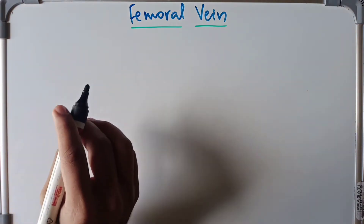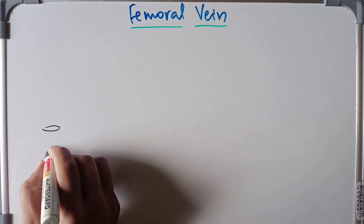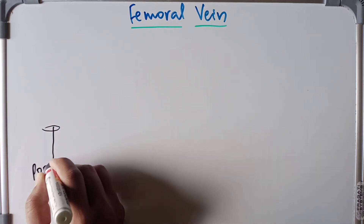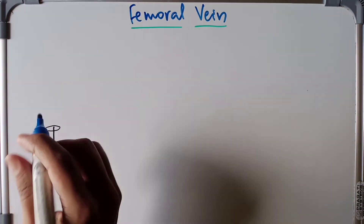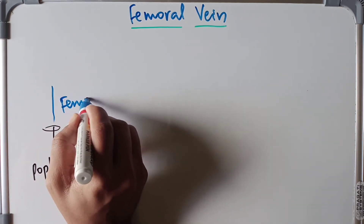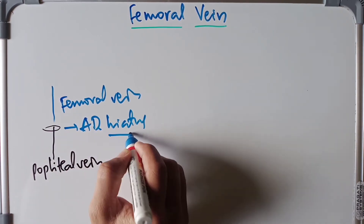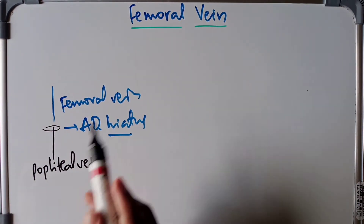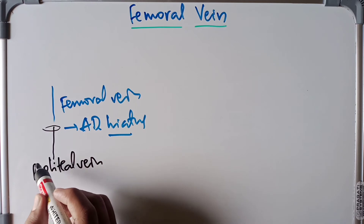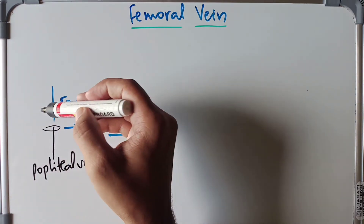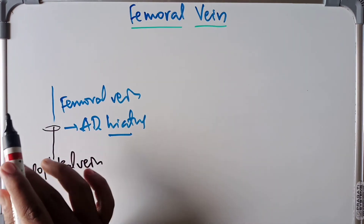The femoral vein is the upward continuation of the popliteal vein at the adductor hiatus. As the popliteal vein passes through the adductor hiatus — the opening of the adductor canal — it emerges as the femoral vein. The femoral vein begins at the lower end of the adductor canal and ascends upward through the adductor canal, finally entering the femoral triangle.